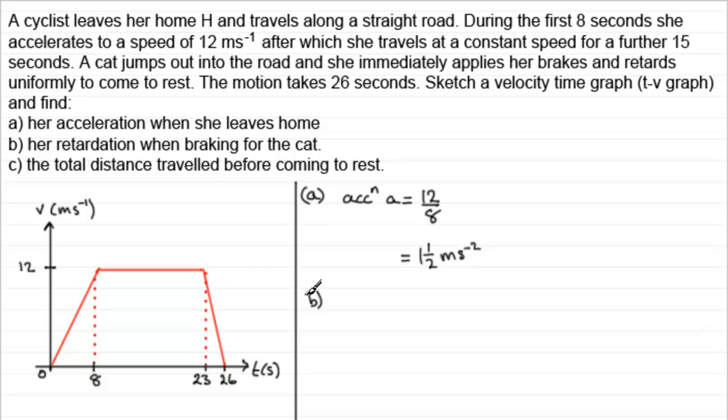Now for part B, we've got to find her retardation when braking for the cat. Well, first of all, what we'll do is this section here. We'll work out the acceleration. The acceleration is given by the gradient again. And we can see that the gradient is negative. We've lost 12 meters per second in 3 seconds. So we've lost 12. So that's minus 12 in 3 seconds. And that clearly is minus 4. Minus 4 meters per second per second. Well, that's the acceleration. But retardation, sometimes called deceleration, is the magnitude of the acceleration. And that will be just the 4. 4 meters per second per second.